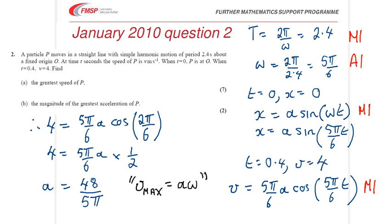For putting the t equals 0.4 in, and using that to find a, we had, let me just be careful here, we've got, that's right, we've got an A1 for that line, and we've got an M1A1 for here.